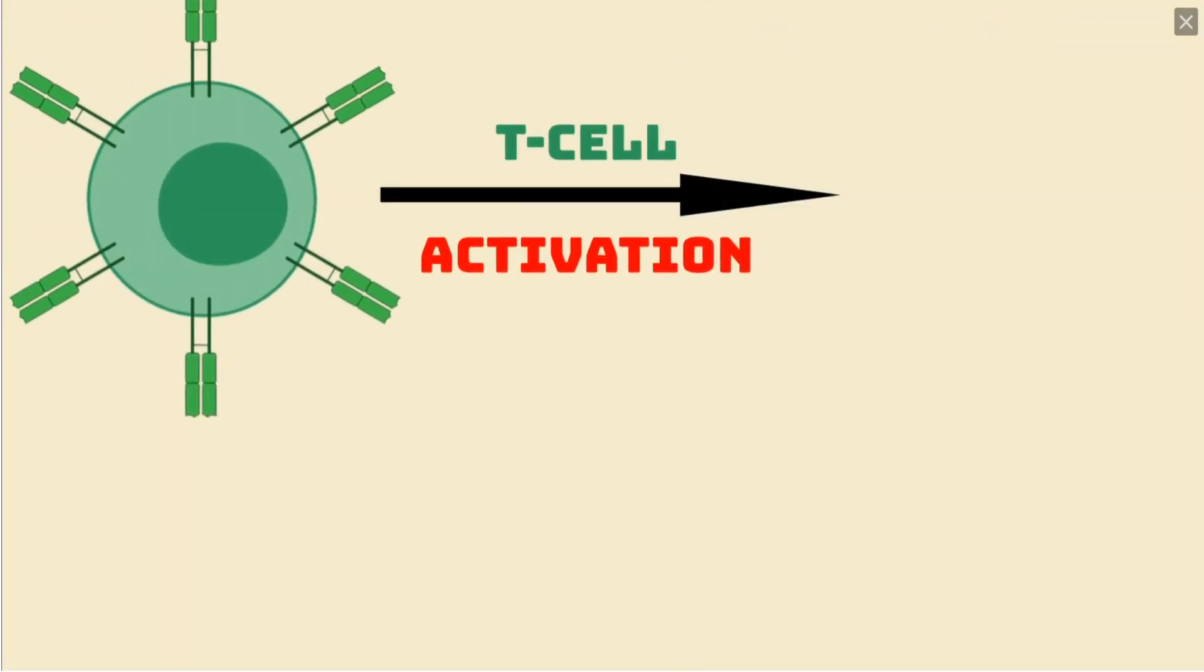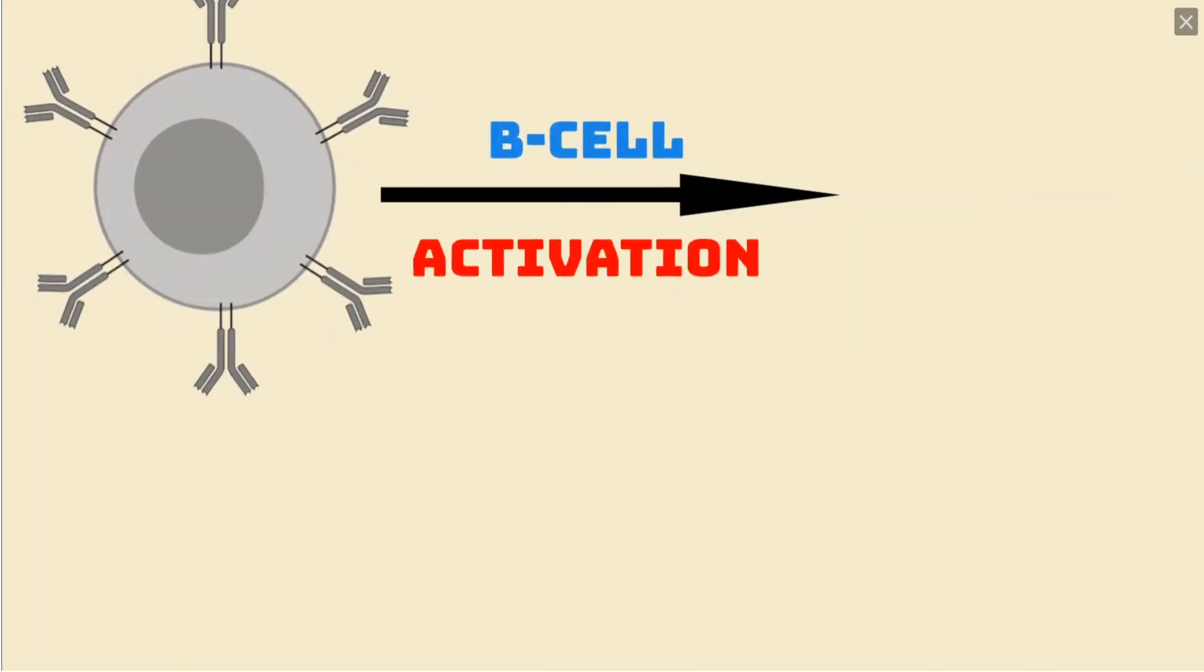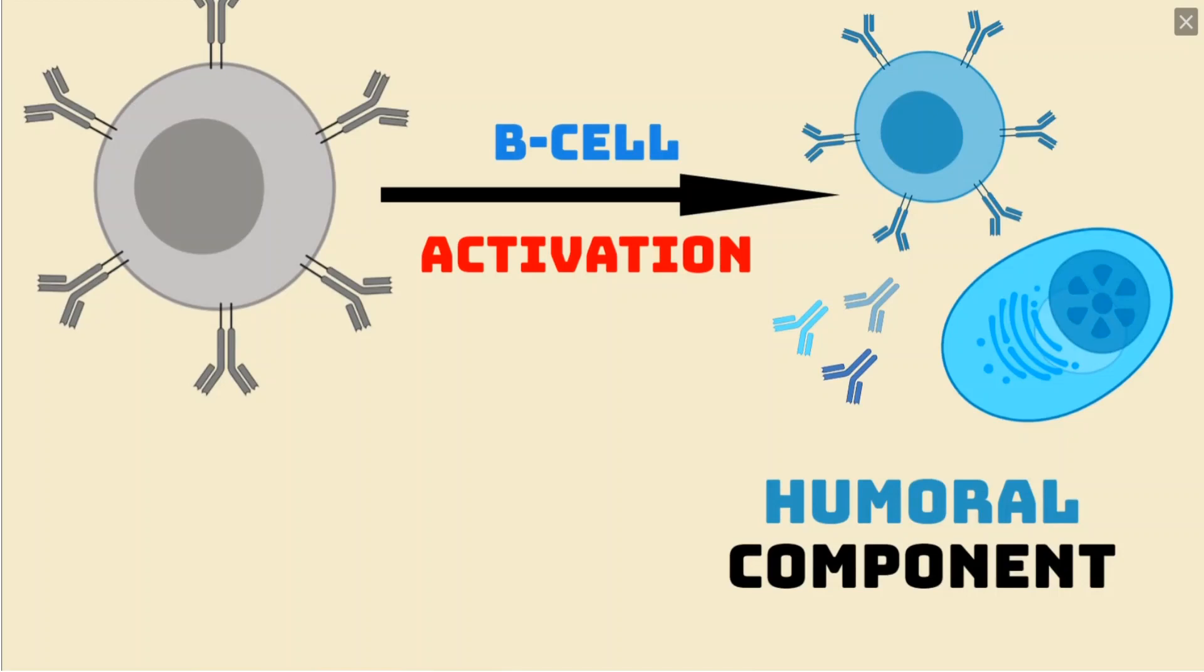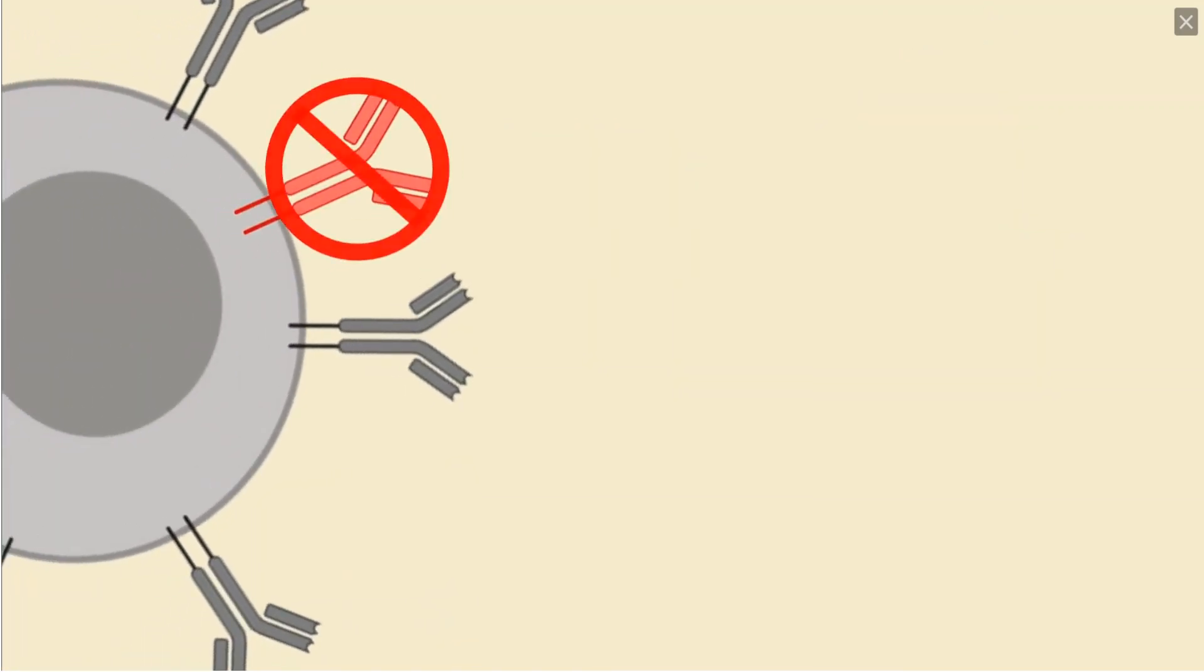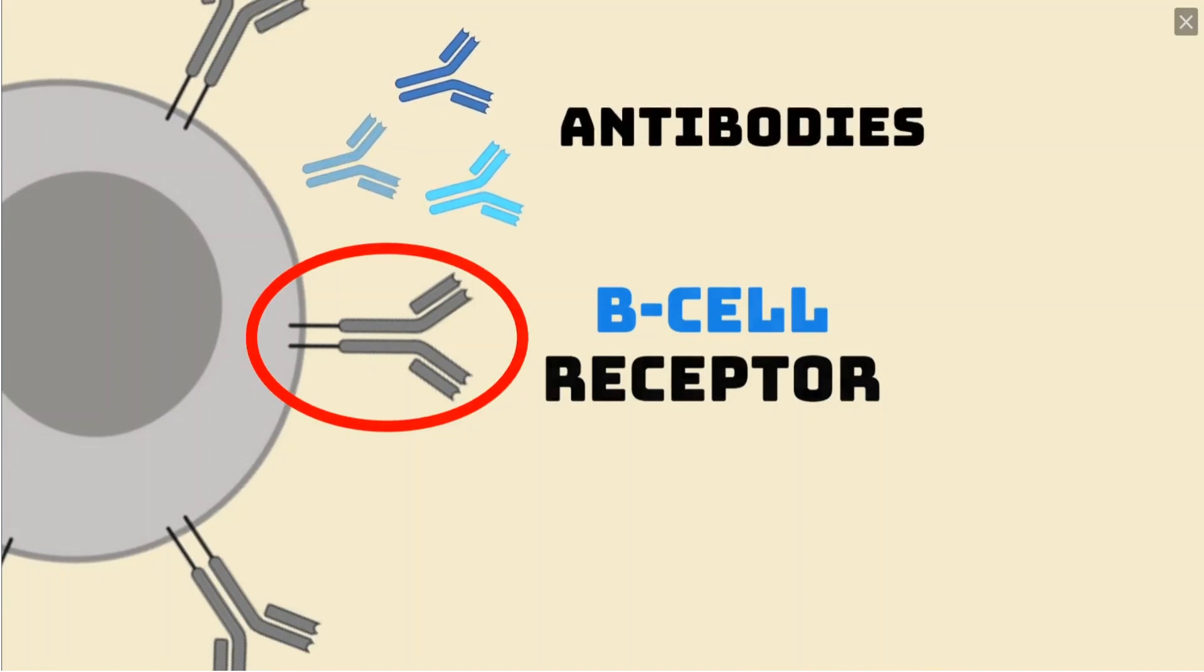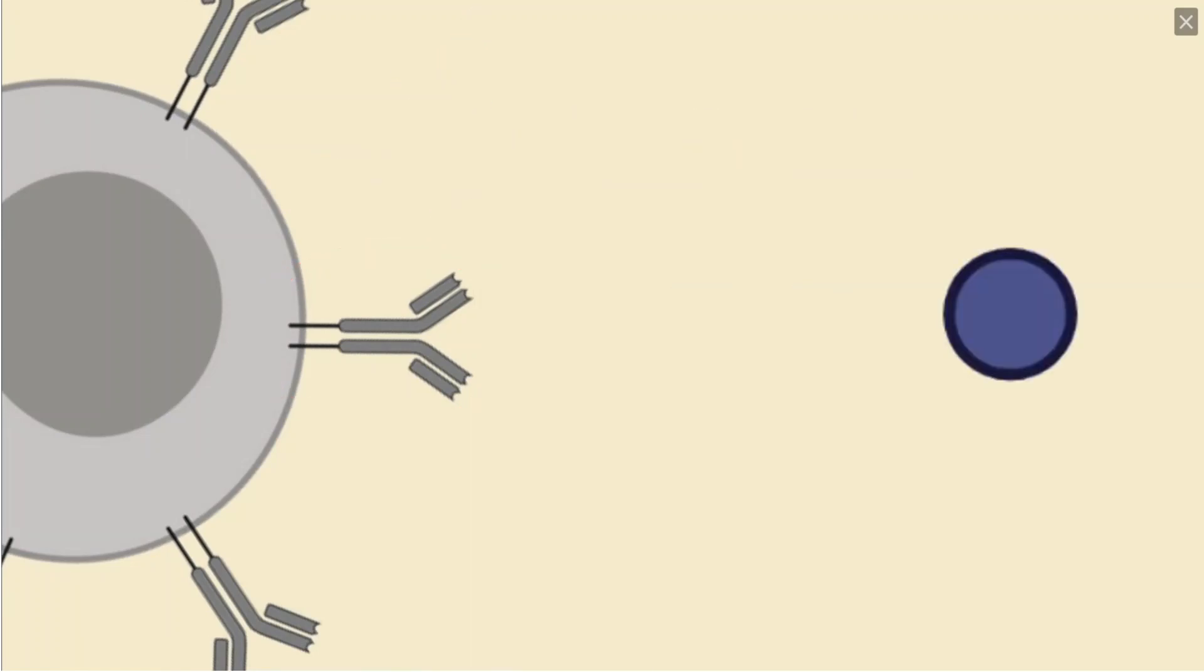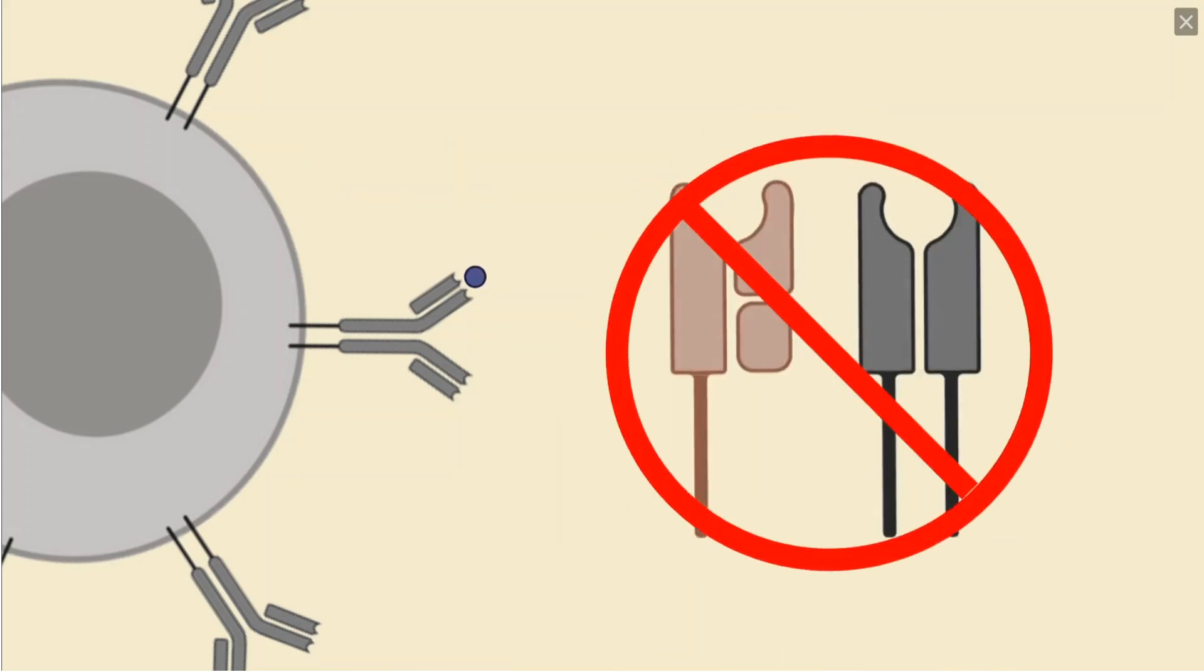Similar to how T cells rely on antigen presenting cells, B cells, comprising what is known as the humoral part of adaptive immunity, rely on T cells to activate, and thus have an even slower response time. Like T cells, each B cell produces only one type of B cell receptor, which is shaped very much like an antibody. This receptor will only recognize one specific antigen. However, unlike T cells, B cell receptors can recognize free-floating antigens, and does not require binding to MHC proteins.